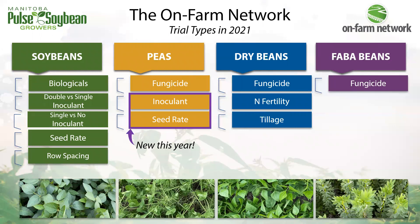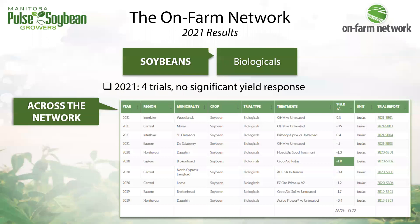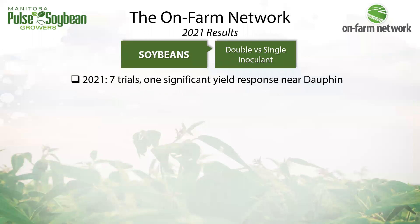Starting with soybeans — in soybean biological trials, we had three trials comparing Own versus untreated and one comparing Primacy Alpha versus untreated. We had no significant yield responses to any biological product this year. Across the network and trials conducted to date, we've been investigating different biological products for about three years now and have had only one negative response so far. We're happy to accommodate more of these trial types if you're wondering whether a product will work on your fields.